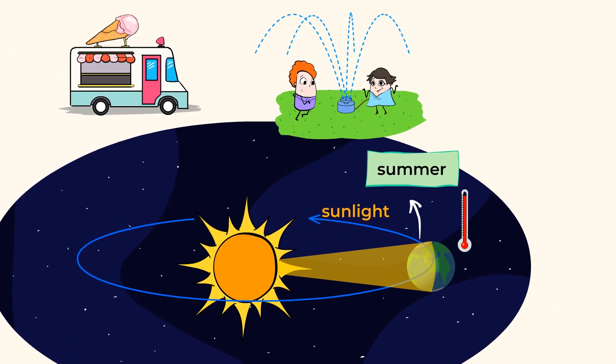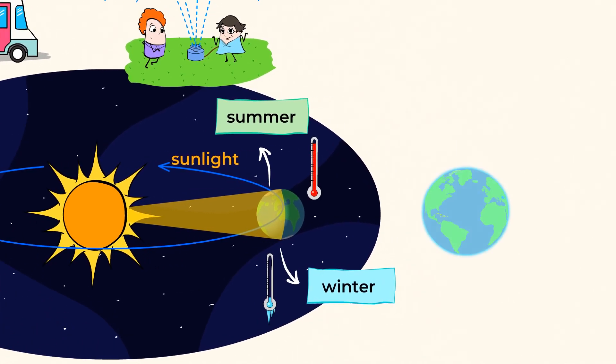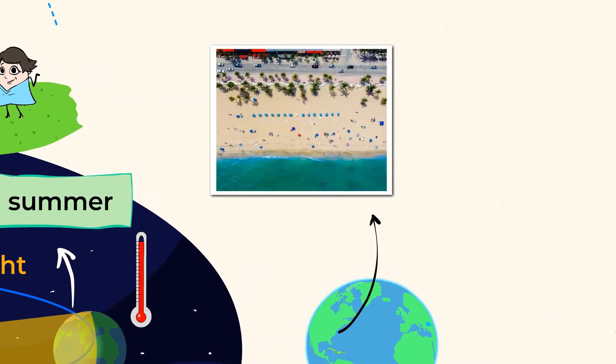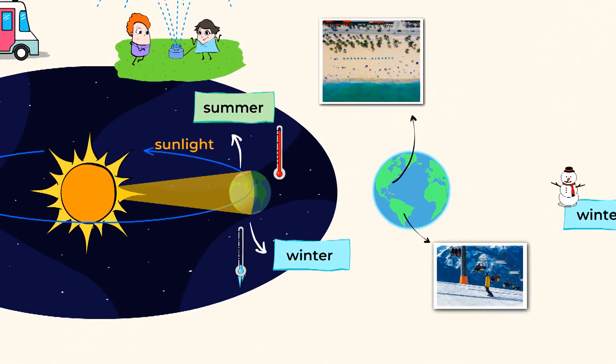However, on the other side of our planet, where the sunlight is indirect, temperatures are colder, days are shorter, and it's winter. That's why if you are enjoying the beach and warm weather in Florida in June, your friends can be skiing at the same time in Argentina. What season is it for you today?